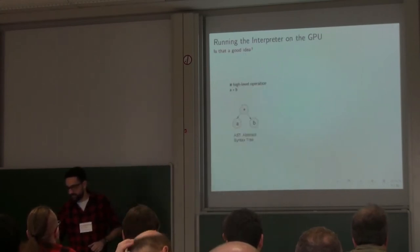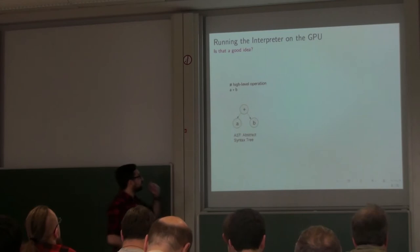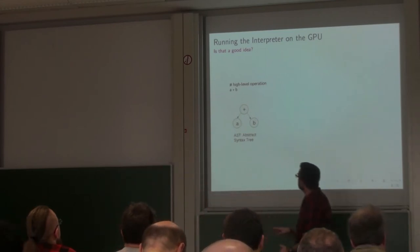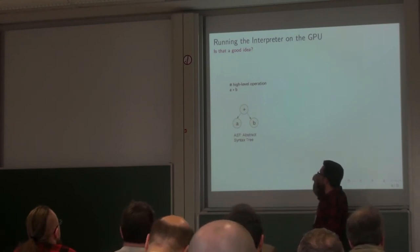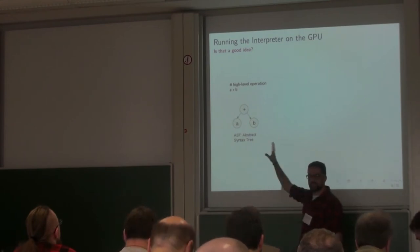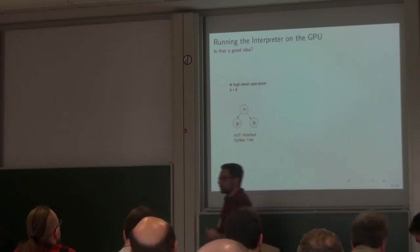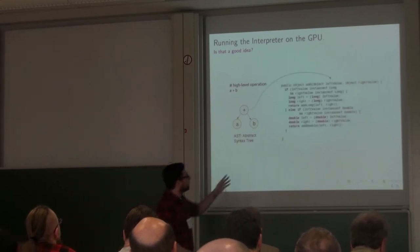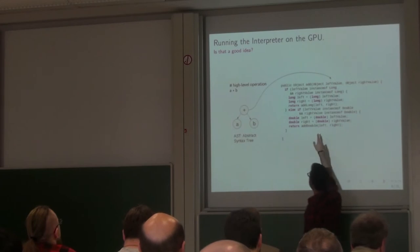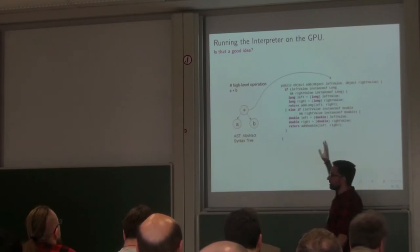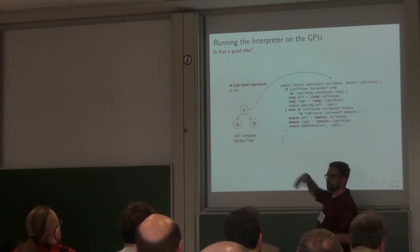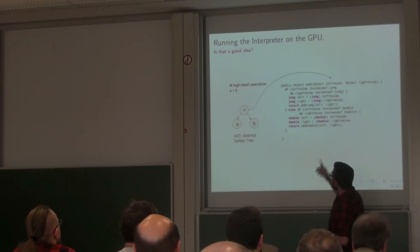Let me expand what I mean by interpreter overhead. Take the expression A plus B — pick Ruby, Python, whatever language you like. A and B have no types. This is the AST that corresponds to that operation. A possible implementation for the plus operator checks: if these two values are long, execute the long version; if double, execute the double; if string, execute the string operation. The question is: shall we compile this to the GPU? This is full of branches.